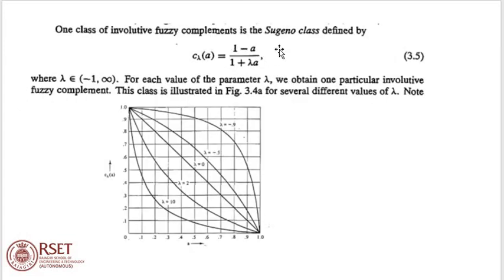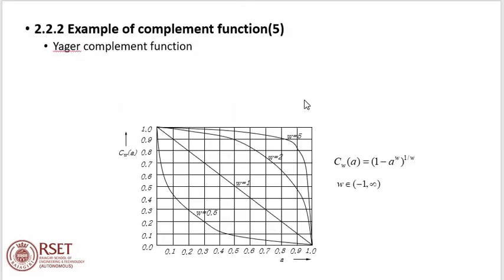Another type of fuzzy complement is known as the Sugeno class, which is defined as C_lambda(A) = (1 minus A) / (1 + lambda A), where lambda belongs to the open interval (-1, infinity). The Yager complement function is defined as C_w(A) = (1 minus A^w)^(1/w), where w belongs to the open interval (0, infinity). When w equals 1, it represents the standard fuzzy complement.